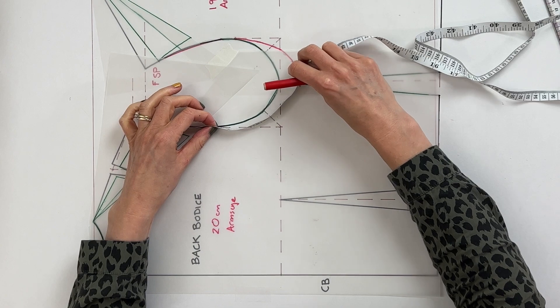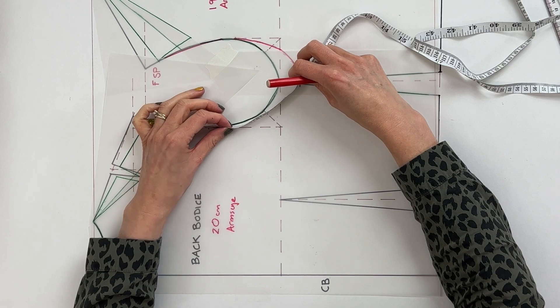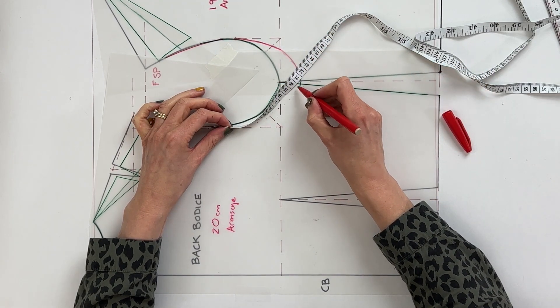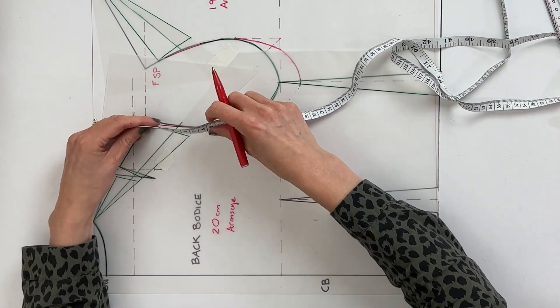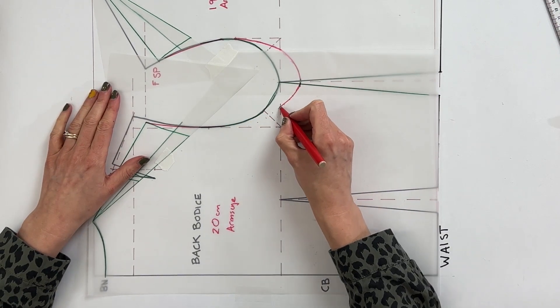So this needs to be 20 centimeters so find a curve that is just going to help you get that or thereabouts. Dot that on. You may want to do a pencil to start off with. Check that you're happy with that new length and that it is correct and then just draw it in.